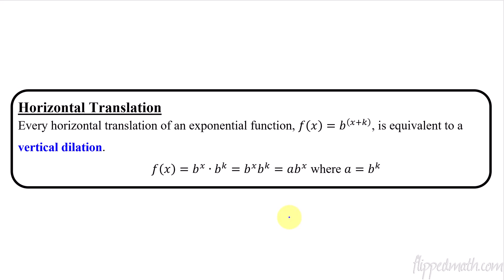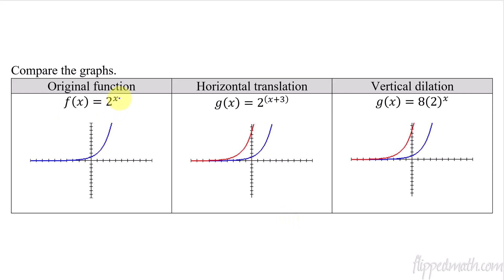Let me show you some graphs to prove the point. If we have the original function 2 to the x and shift it left three — so x plus 3 inside the exponent — the whole graph shifts left three units. We can also think of this as 2 to the x times 2 to the third, which is 8 times 2 to the x. So 8 times 2 to the x takes every y value and multiplies it by 8 — a vertical dilation by a factor of 8. The graphs are identical. Horizontal translations and vertical dilations are the same thing for exponential functions.